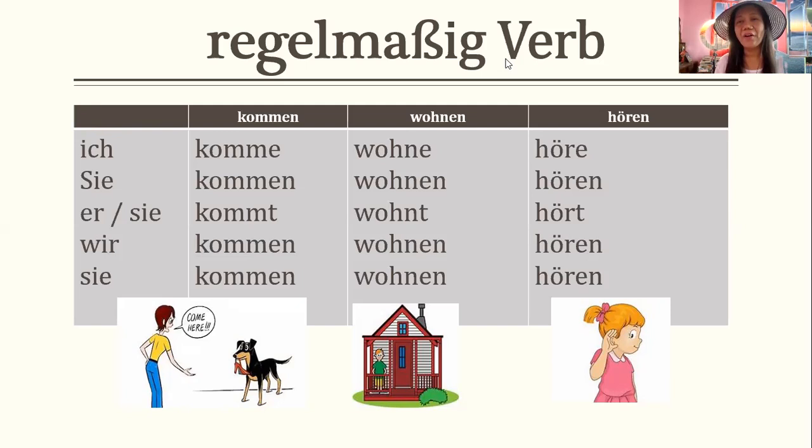Wohnen auf Englisch bedeutet 'to live.' Still the same rule — you delete the -en. Ich wohne, Sie wohnen, er wohnt, sie wohnt, wir wohnen, sie wohnen.